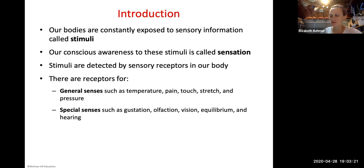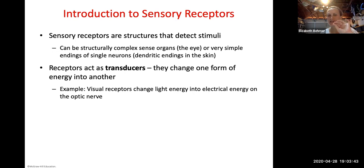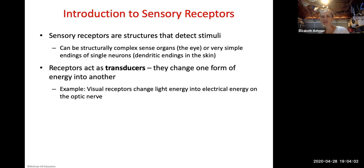Sensory receptors are structures that detect stimuli. They can be structurally complex sense organs like the eye or ear, or very simple endings of single neurons, such as dendrite endings in the tips of your fingers. These receptors act as transducers — they take a stimulus and convert it into another form of energy. For example, visual receptors in the back of your eye change light energy into electrical impulses that the optic nerve carries to your brain.